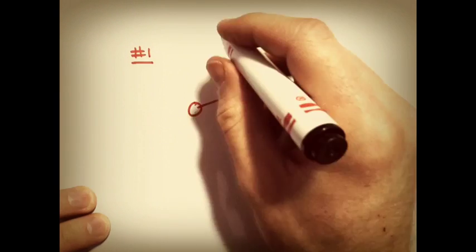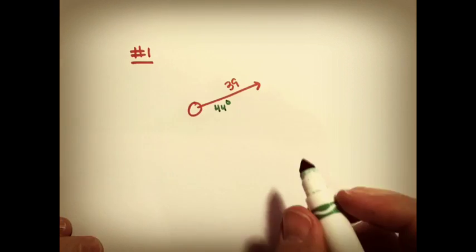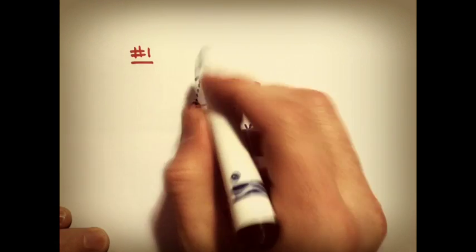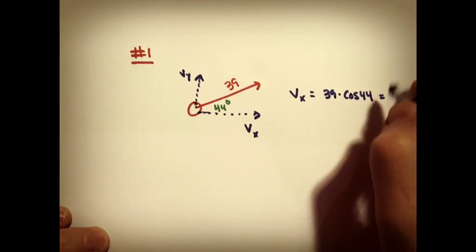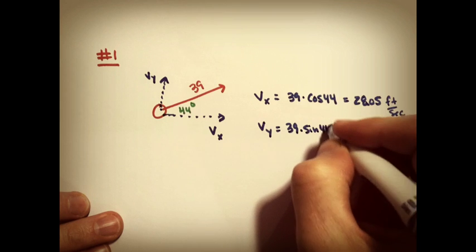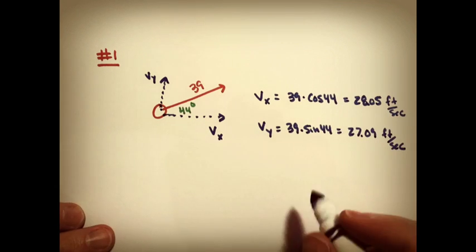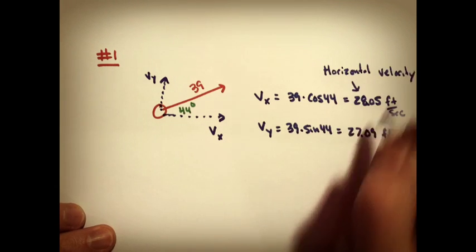Let's look at one of the examples on the back. Let's start with one. They say a soccer ball is kicked at 39 feet per second at a 44 degree angle. They would like to know the vertical velocity and the horizontal. Let's do the horizontal first. It's up top. And the vertical is below.